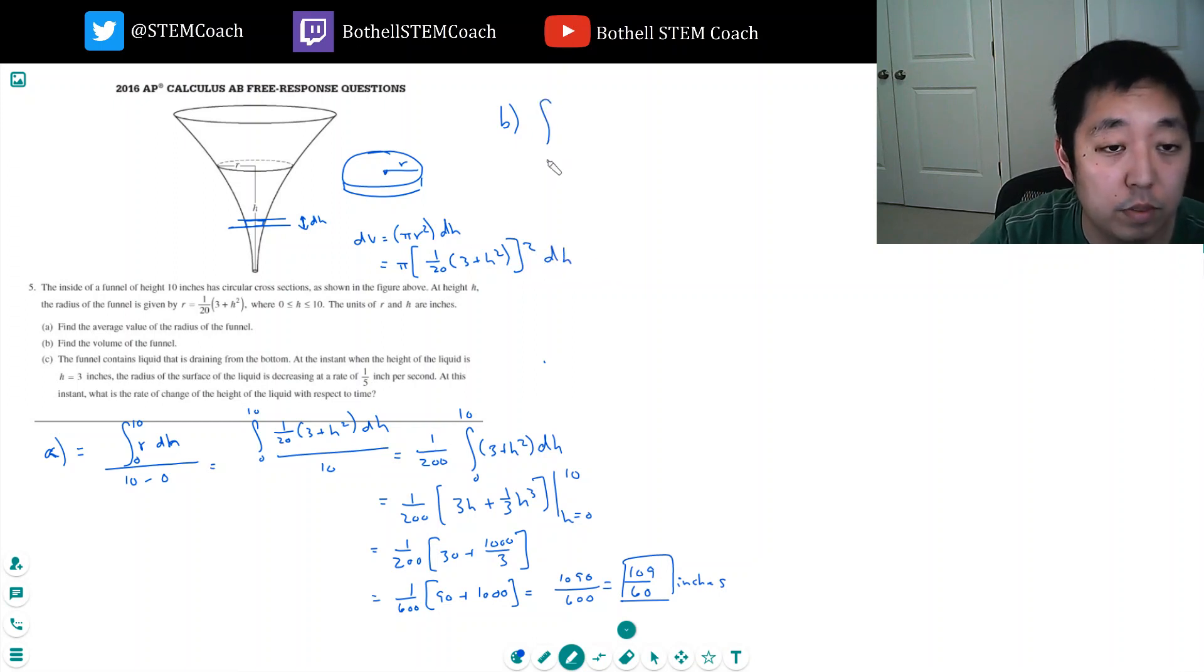This is like kind of tedious math-wise. This seems like a harder test, my opinion, than the other ones we've been doing. And then I'm going to add that all up from 0 to 10. Pi over... I bring out the 1 over 20th squared. That's pi over 400. Integral 0 to 10, (3 plus h squared) squared dh.